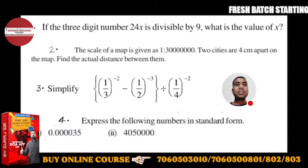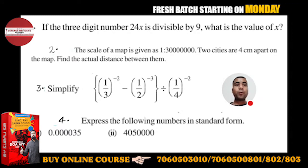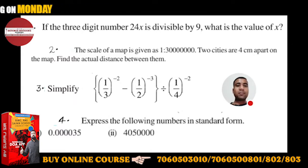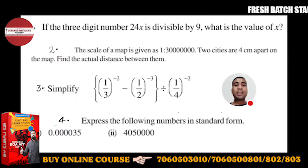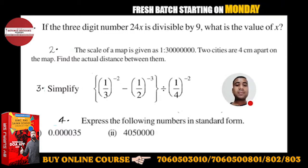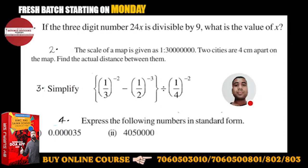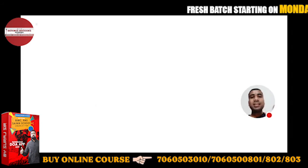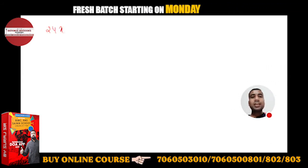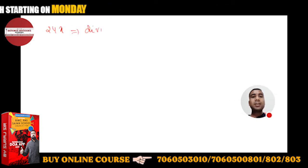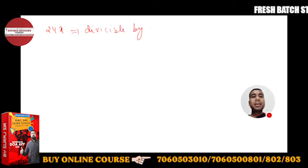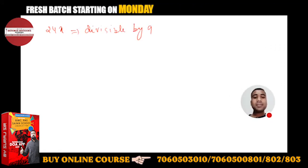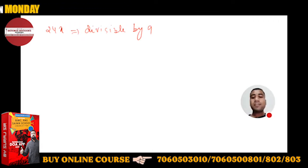If the three-digit number is 24x and it is divisible by 9, then what is the value of x? So the divisibility rule: since 24x is divisible by 9, the sum of its digits should also be divisible by 9.